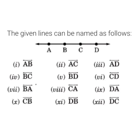The 12 lines named from points A, B, C, and D are: line AB, line AC, line AD, line BC, line BD, line CD, line BA, line CA, line DA, line CB, line DB, and line DC.